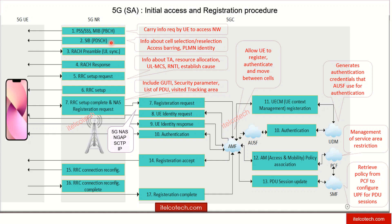The System Information Block carries information about cell selection and the threshold defined for reselection when moving from one cell to another. It also indicates whether this particular cell is barred or not barred, whether the UE can latch on to this cell or not, and what the PLMN identity of this particular cell is. All this information is transmitted in the SIB, or System Information Block.